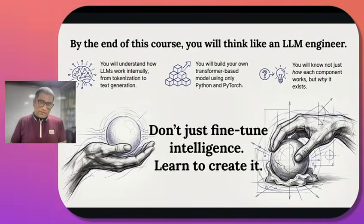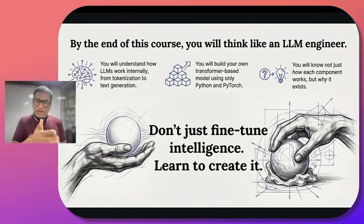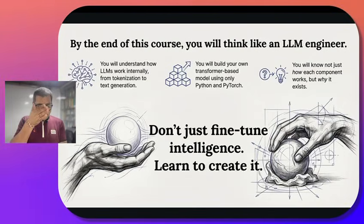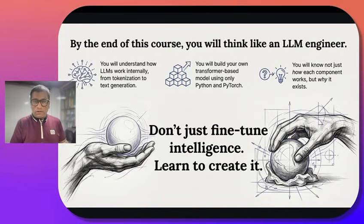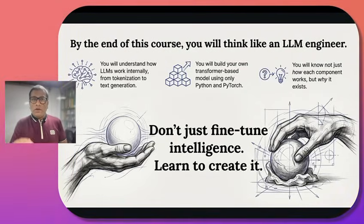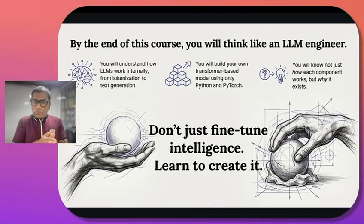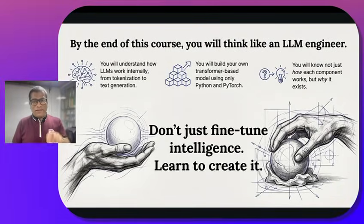Now, what are you going to do with this course? At the end of this course, you will think like an LLM engineer, not like an LLM user. You will understand how LLMs work internally, from tokenization to text generation. You are going to build your own transformer-based model — not using an existing model and fine-tuning it. No, we are going to start from scratch. We will not just know what the components are doing, but also why they are there and what functionality they perform. We are going to create it from scratch.